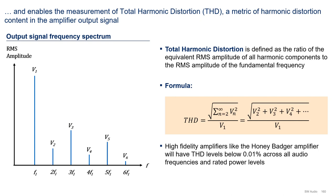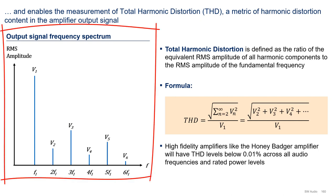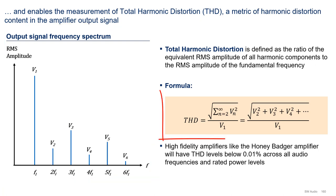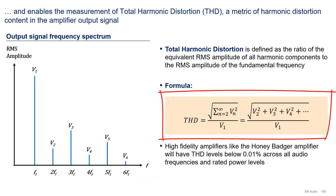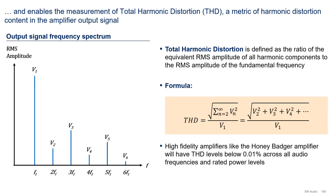THD is defined as the ratio of the equivalent RMS amplitude of all harmonic components to the RMS amplitude of the fundamental frequency. If we look at the Fourier transform of the amplifier output, the height of each vertical bar represents the RMS amplitude of that tone. Therefore, we can write THD as the ratio of the RSS of the harmonic RMS amplitudes V2 through Vn to the RMS amplitude of the fundamental V1. High-fidelity amplifiers like the Honey Badger amplifier have THD levels below 0.01% across all audio frequencies and rated power levels. For the SNW-BFA01, we're aiming for the 0.001% mark.